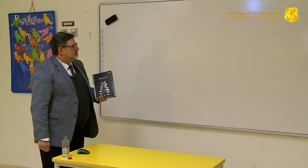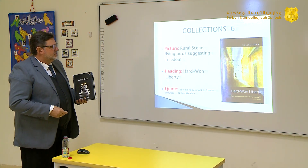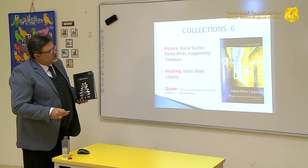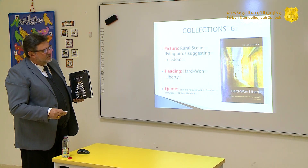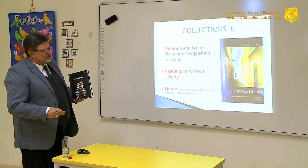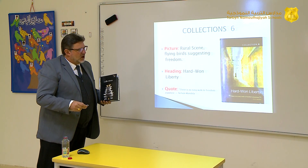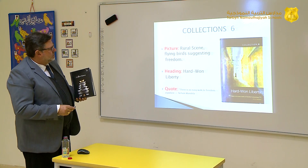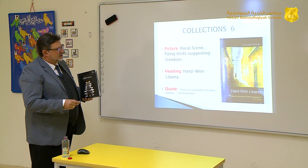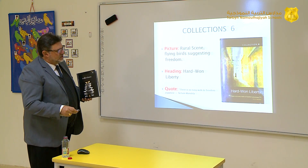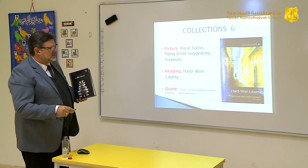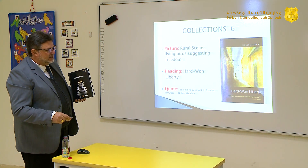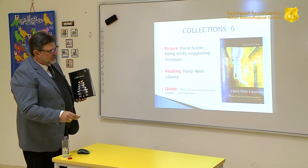Please turn to collection number six. There you'll see it says collection number six, and there's a picture. It seems like a little boy there, with some birds flying. This is not out in the countryside — this is outside in a type of town, maybe a small town. We would say that is a rural scene. Rural meaning small town. And we see some birds flying there. What do the birds suggest? Why did they put a picture of birds in there? We'll have to look at the theme to maybe guess what the birds are doing and what they have to do with the theme.